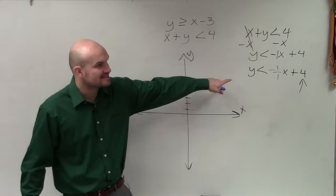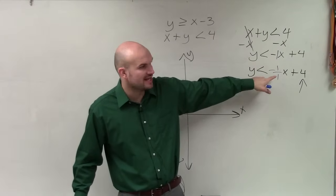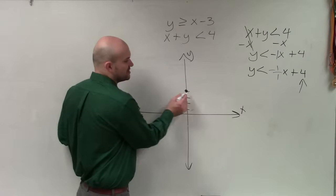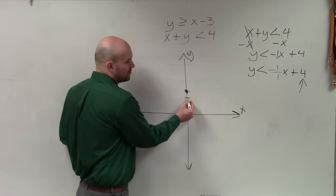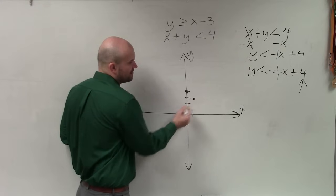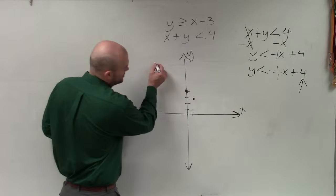Then I use my slope, which says the change in the y-coordinates is negative 1, and the change in the x-coordinates is positive 1. So since the change in the y-coordinates is negative 1, I'm going to go down. Since the change in the x-coordinates is positive 1, I go to the right. Then I look at my inequality symbol, and I notice that it is less than. So it's going to be a dashed line.